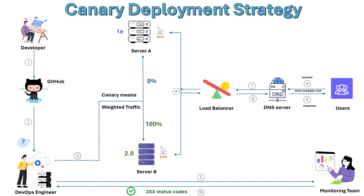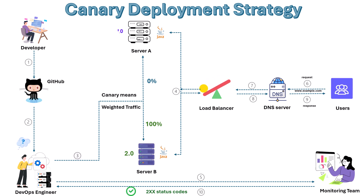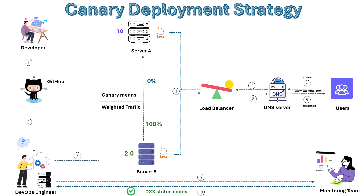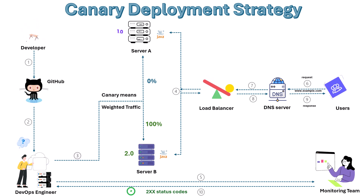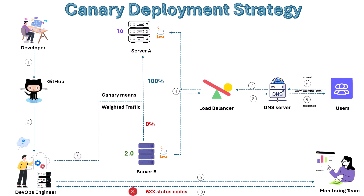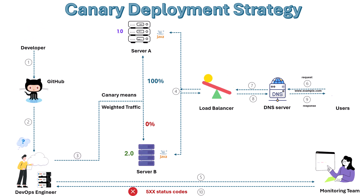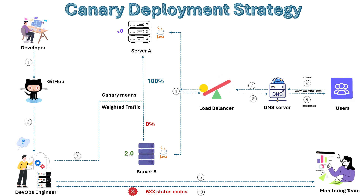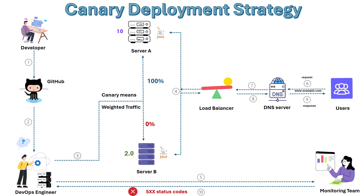In this final stage of canary deployment, 100% of the traffic has been shifted from the old version 1.0 to the new version 2.0. The canary phase is complete and the load balancer is now routing all requests to the new version. During the above stages, if the end user faces any issue and the monitoring team finds more 5xx status codes, then the DevOps team will decide to roll back and shift 100% of the traffic to the old version. This happens mainly during the initial stages.